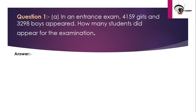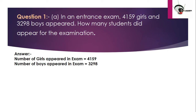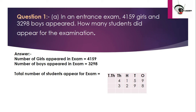The number of girls appeared in the exam equals 4,159. The number of boys appeared in the exam equals 3,298. This is the information noted down. For step three, since they are asking how many students appeared in total, we need to find the total number of students who appeared for the examination.